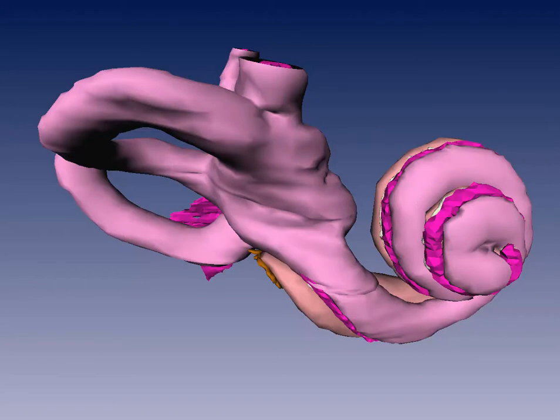In magenta we see the endolymph containing membranous labyrinth. We see the lateral semicircular canal, posterior semicircular canal, and the truncated superior semicircular canal.